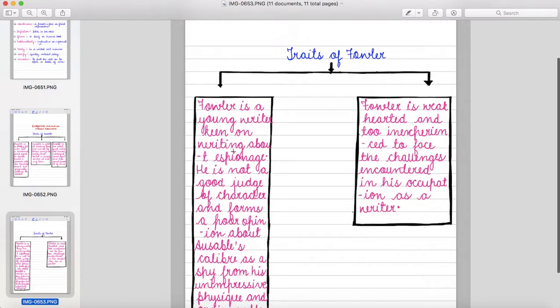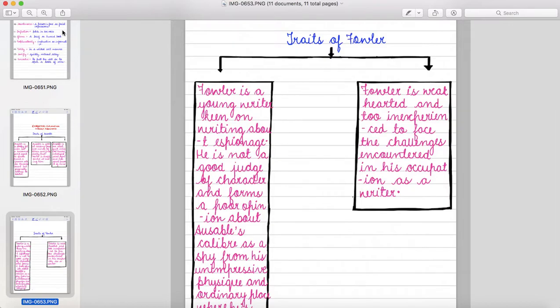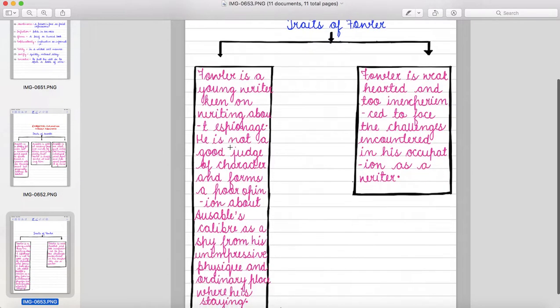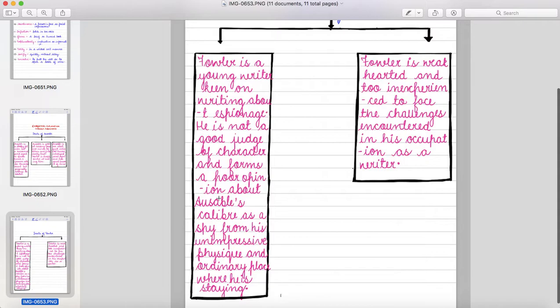Now, let's discuss the traits of Fowler. Fowler is a young writer, keen on writing about espionage. He is not a good judge of character and forms a poor opinion about Ausable's caliber as a spy from his unimpressive physique and ordinary place where he is staying.